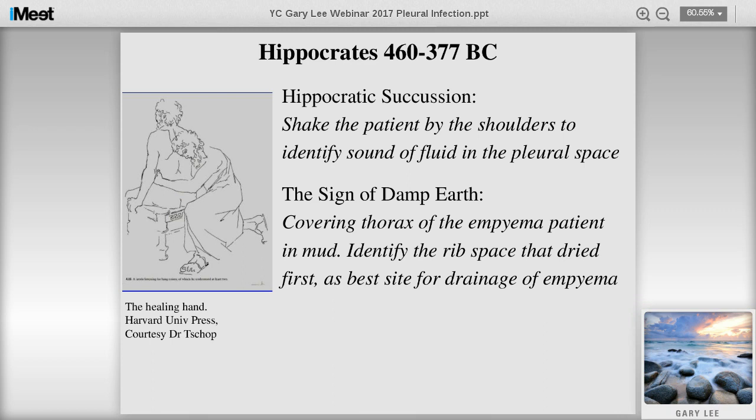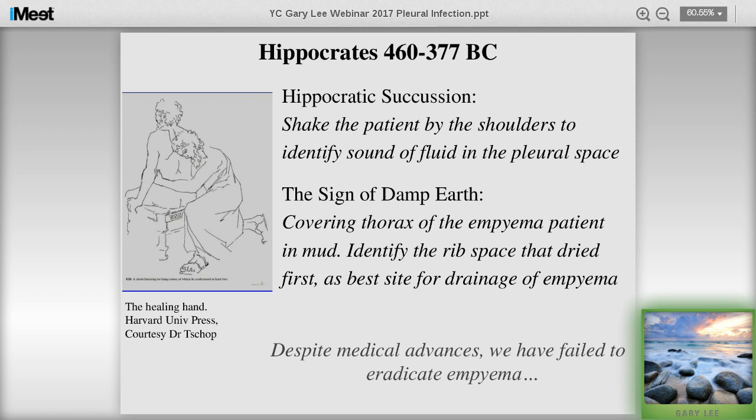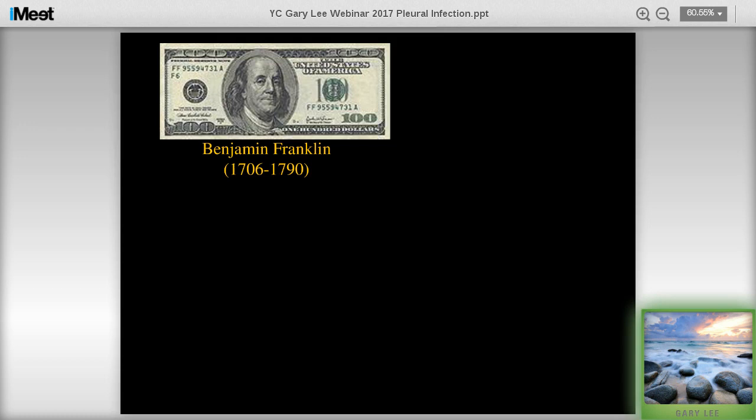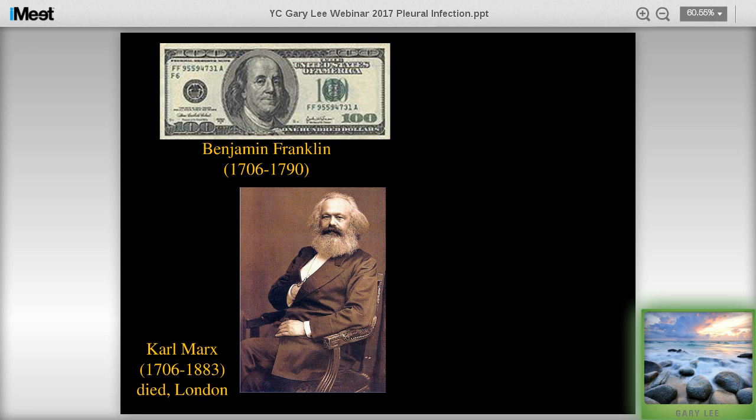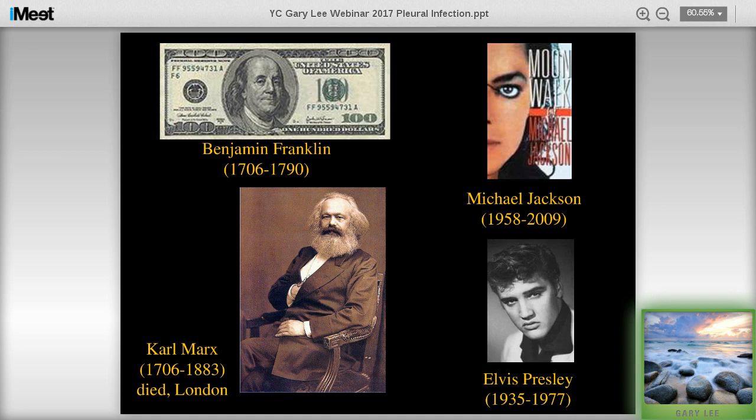It's now 25 centuries since Hippocrates' days. We have modern antibiotics and intensive care. But despite all these medical advances, we have failed to eradicate empyema. Throughout the last 25 centuries, many very famous people have succumbed to pleural infection. Next time you look at the $100 bill, Benjamin Franklin had pneumonia and empyema and died from it. So did Karl Marx. Other famous people have written in their books about childhood recurrent pleurisy.